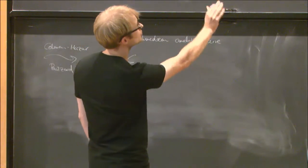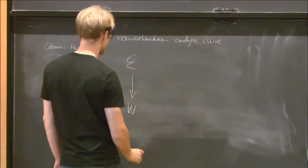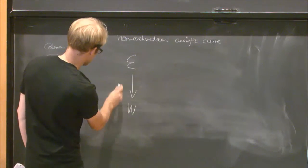So, p-adic modular forms also have a notion of a weight, which is a far more general gadget than an integer. So, there is a map.